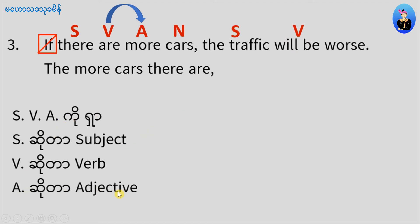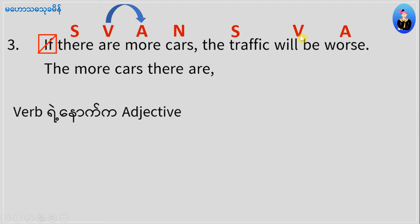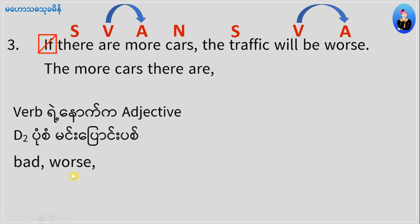If you have a verb, this word is the adjective — for example, 'worse', which is an adjective. 'Worse' is D2, the comparative degree. The adjective degrees are D1, D2, D3: positive degree, comparative degree, superlative degree.